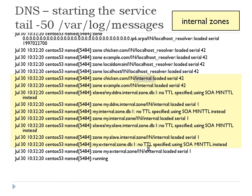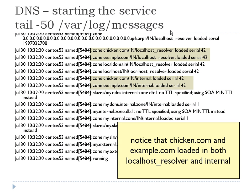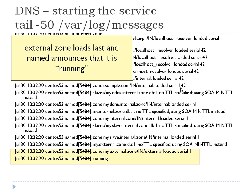These are your internal zones — they all say 'internal'. You could look through and there shouldn't be a 1912 entry in internal where there was one above. Notice that chicken.com and example.com both loaded in and appear happy. Zone chicken.com in localhost loaded with serial .42, and in internal it also loaded with .42. If you had a syntax error, more than likely both would fail — or both would work. The external zone loads and named announces that it is running. Good to go.